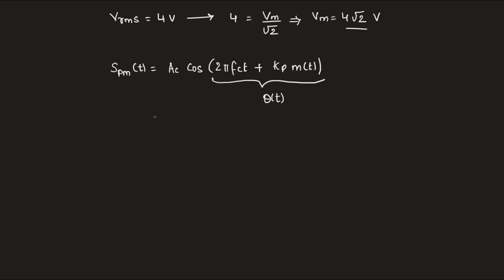It is given that the frequency of message fm is 1000 hertz, the phase deviation constant kp is given as 2 radians per volt, and the carrier frequency fc is 1 megahertz.